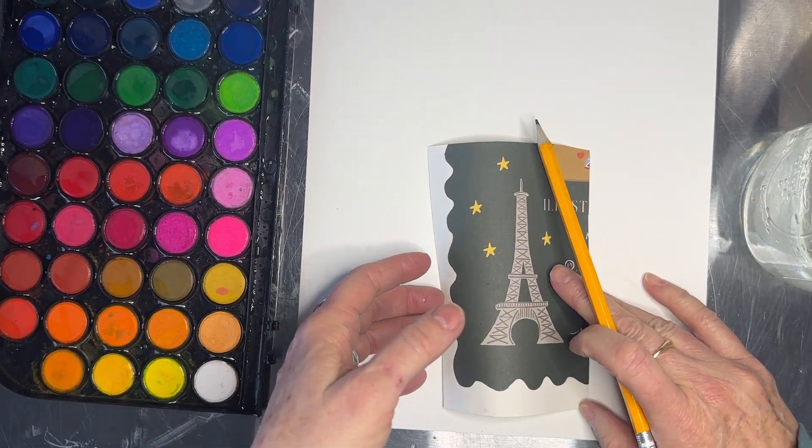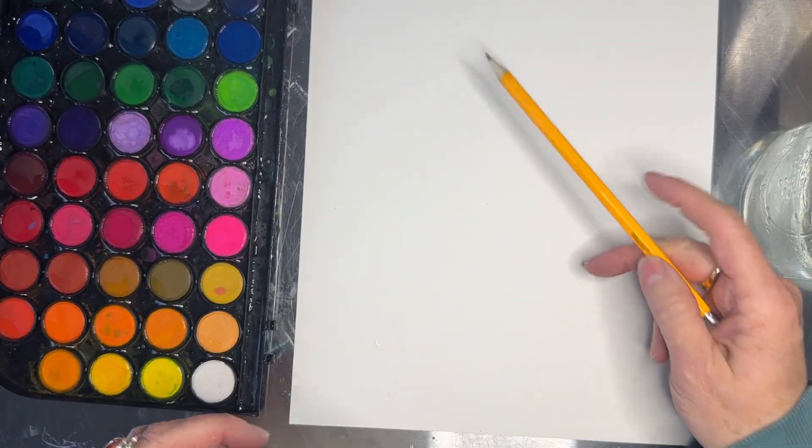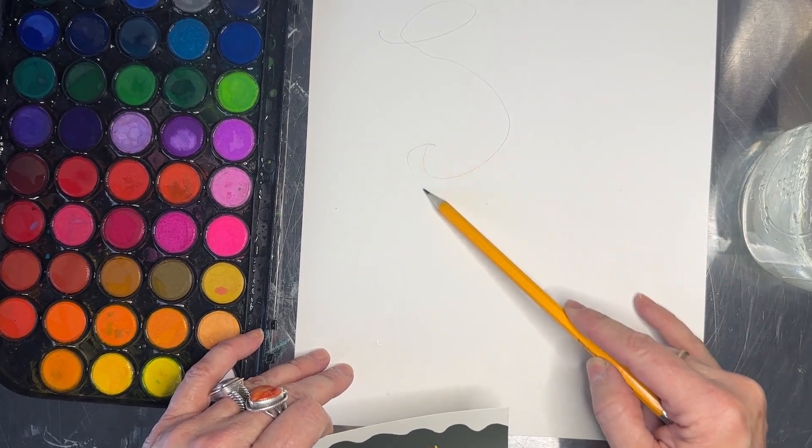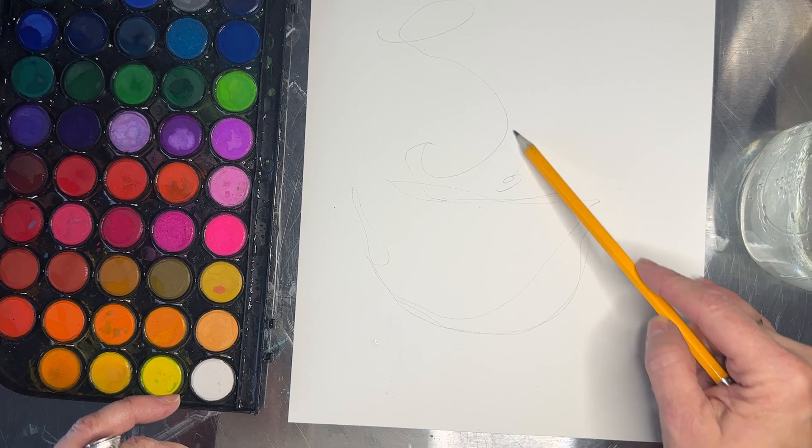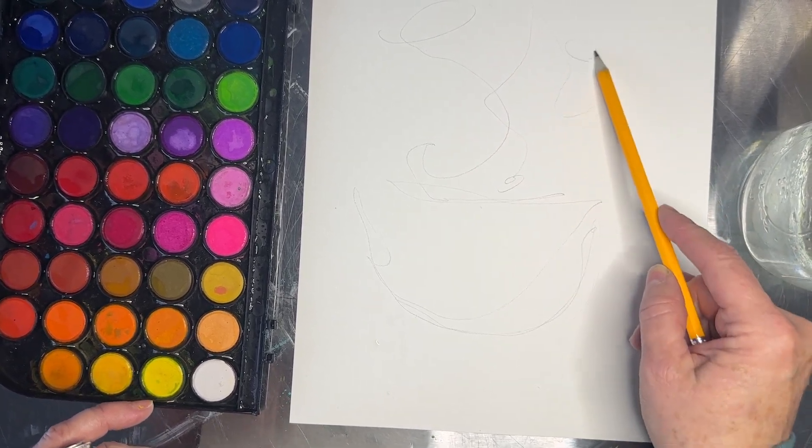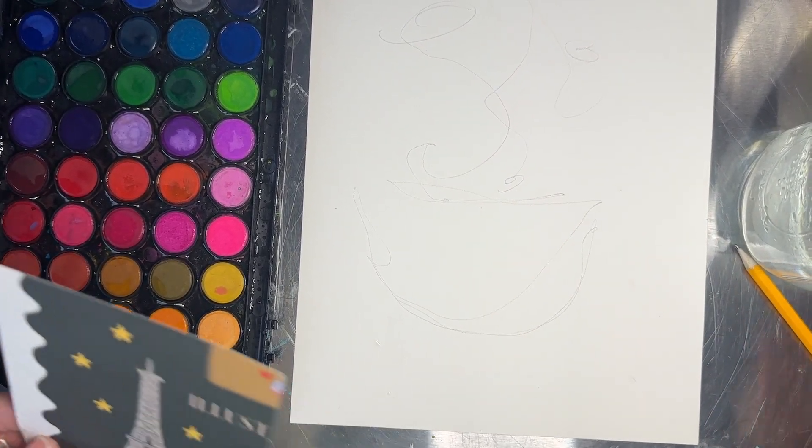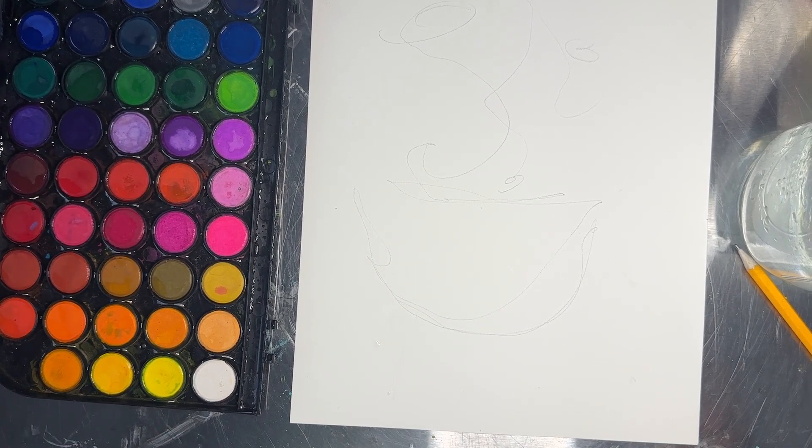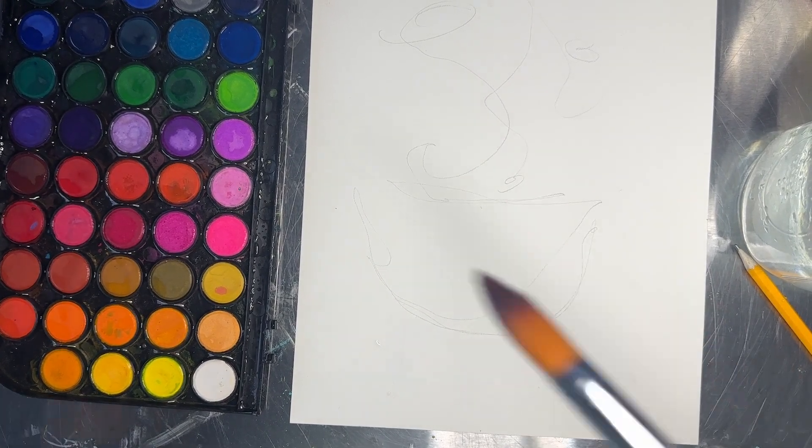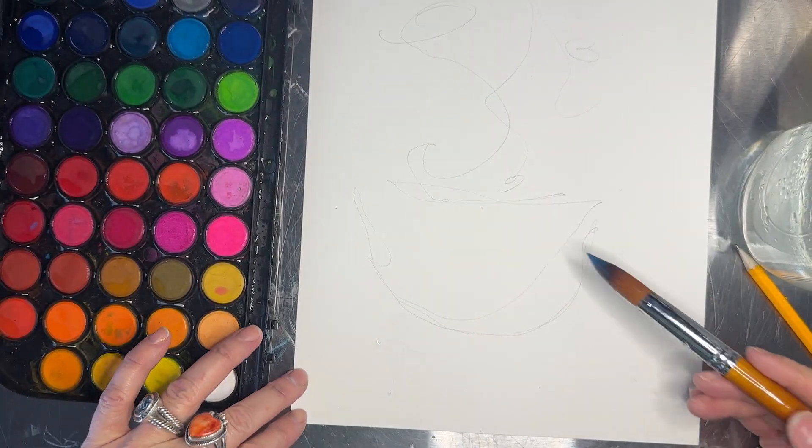Whenever I do a watercolor painting it always starts with a sketch and a pencil. Sometimes I start it without a pencil sketch, but you can make a sketch like this and make a really light line. This almost looks like a vase with flowers, and then bring color on top of line.